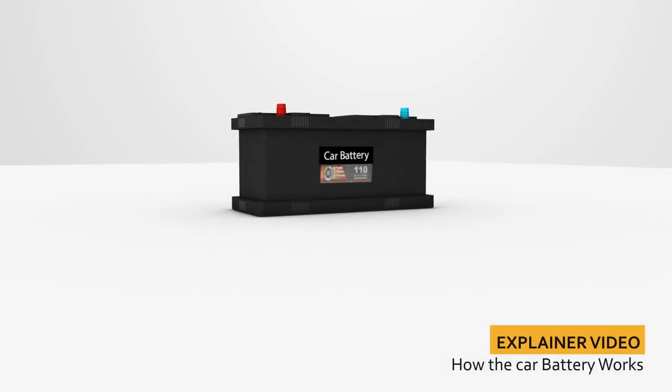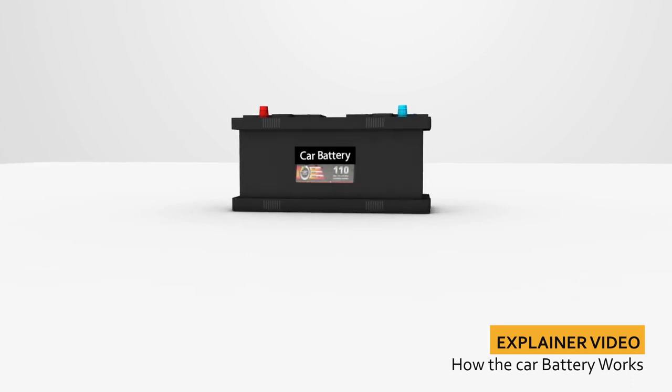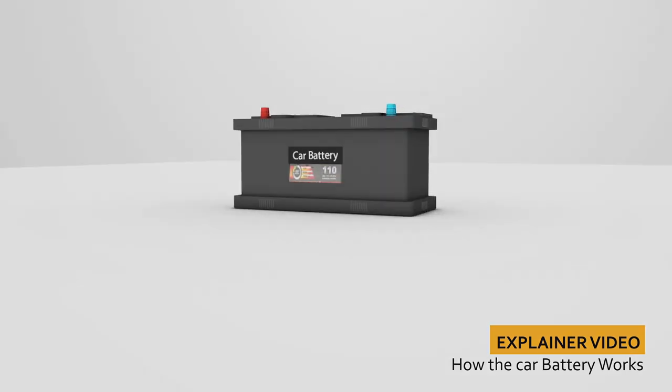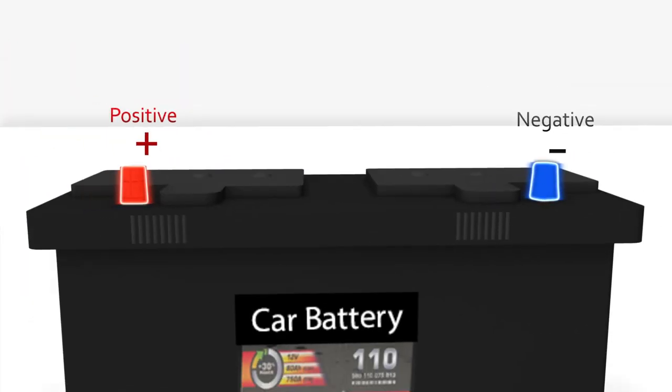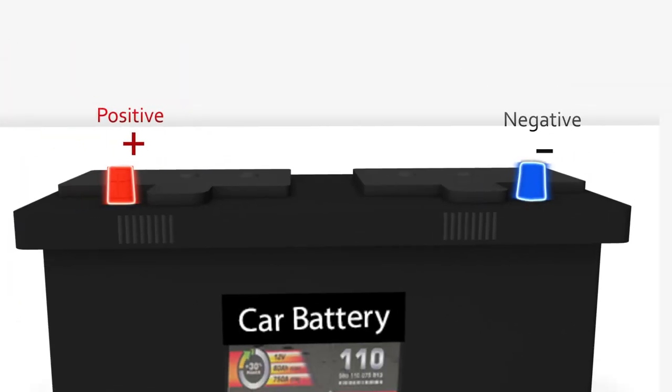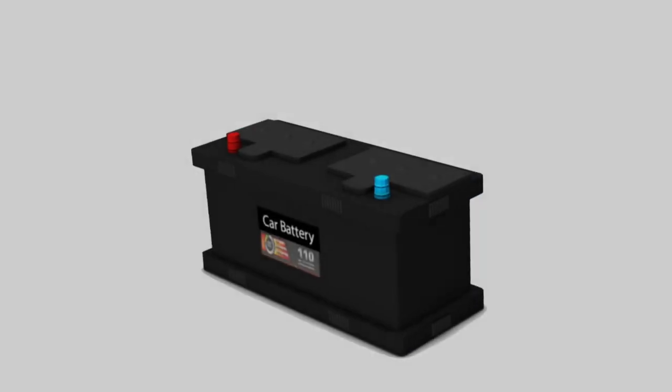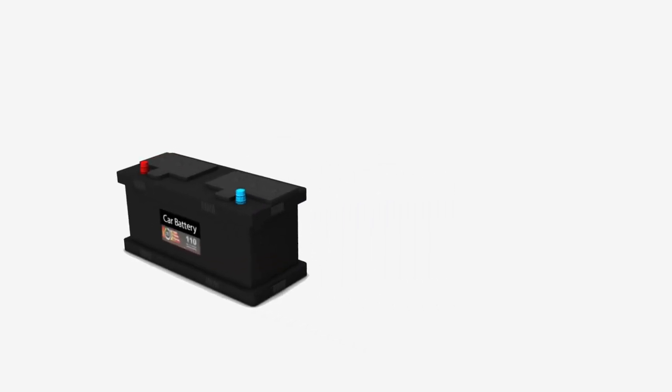This video shows the basic principle of how a car battery works. A car battery has two terminals: a red positive terminal and a blue negative terminal. You can easily notice these terminals when you see a car battery. The main purpose of a car battery is to start the engine.